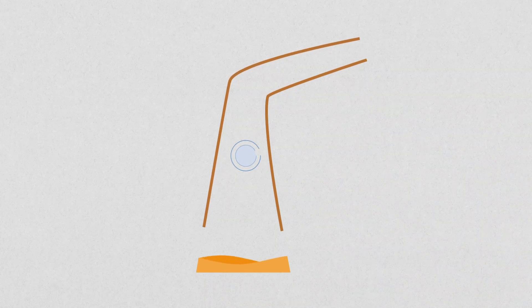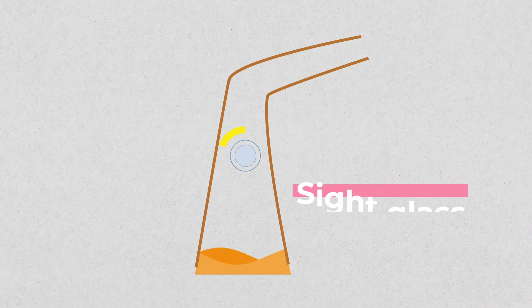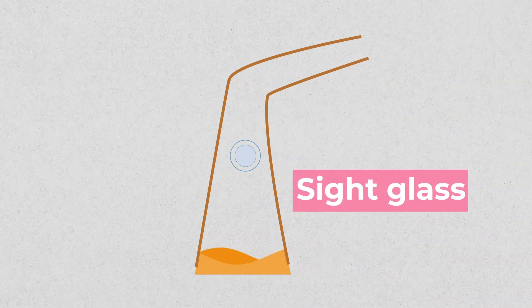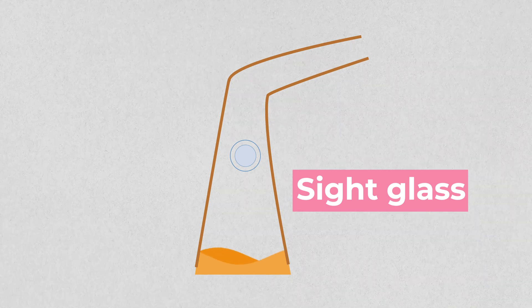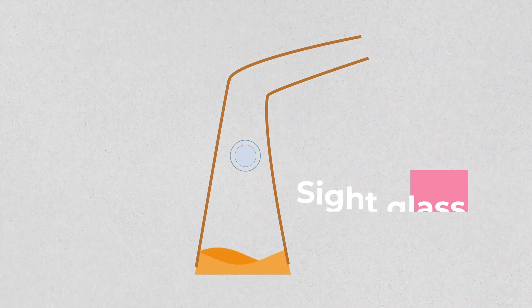The head of the still will often have a sight glass in it. These are little windows in the still to allow the distiller to see straight through the still and to keep an eye on what's going on inside the still.